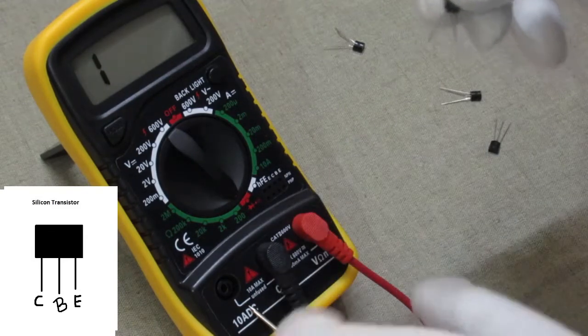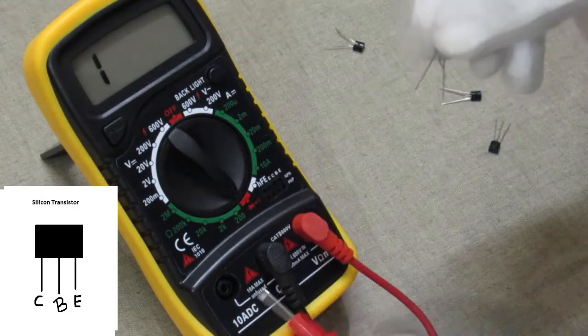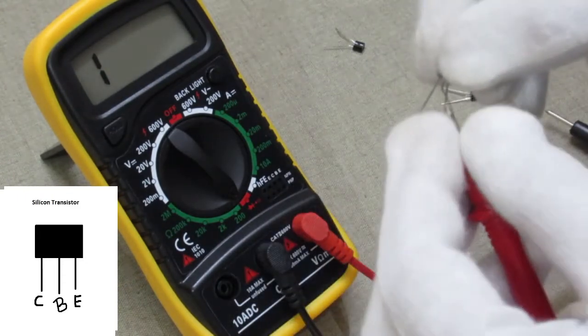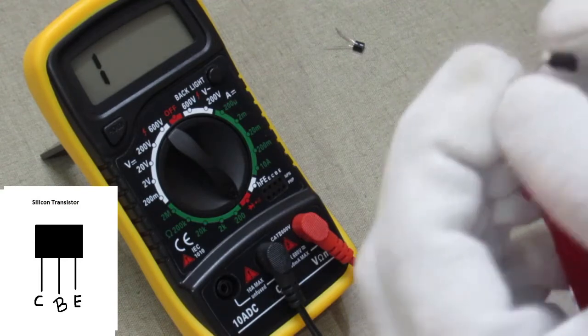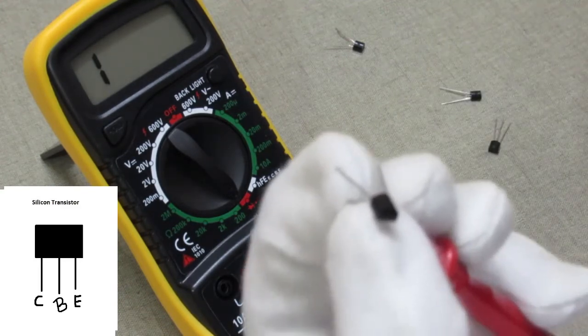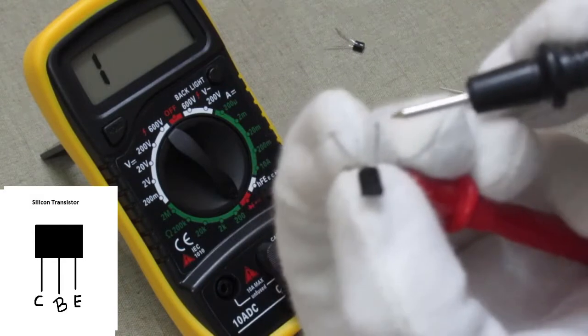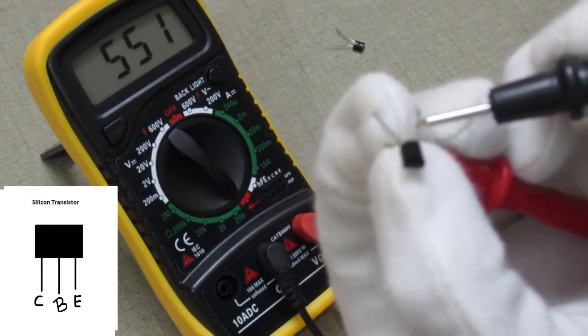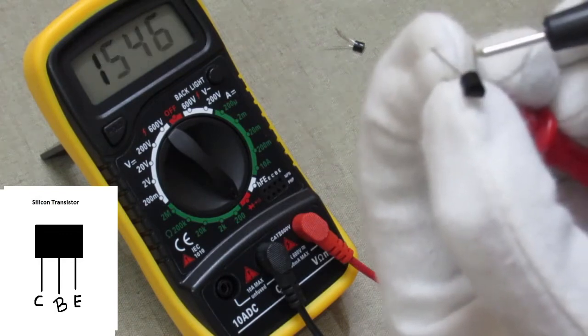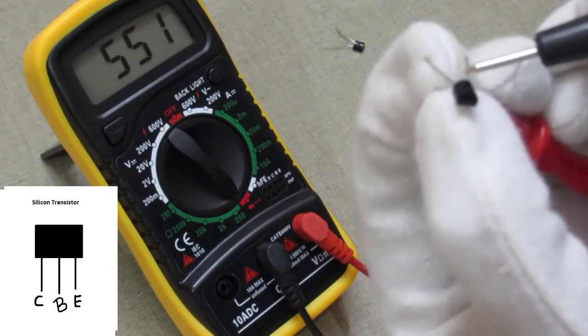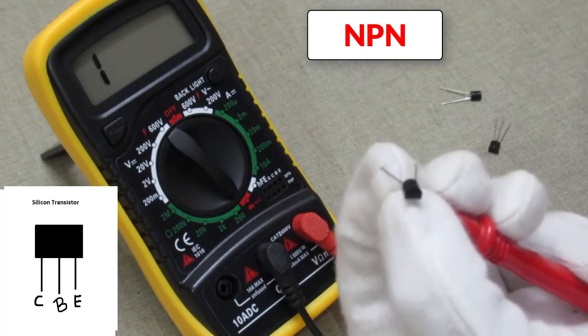And now touch the red probe to the transistor base and black probe to the transistor emitter. Then collector. The digital multimeter showing some readings on both sides. That means this transistor is NPN transistor.